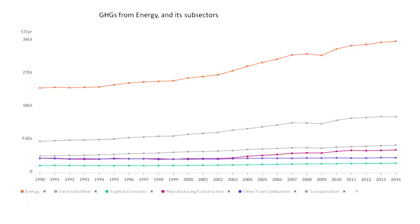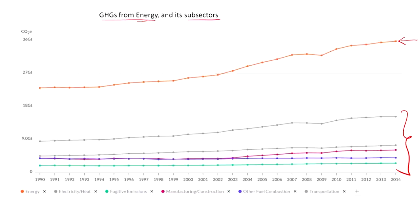Here we have greenhouse gases from energy, and we are going to discuss the sub-sectors. As we have seen, the major contributor to greenhouse gas emissions is our production and usage of energy in various forms. Once you look at this data, you will be able to see what you can expect, and also understand areas where you can innovate or regulate to cut down on these emissions.